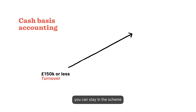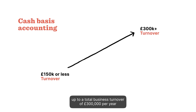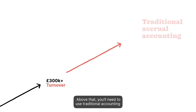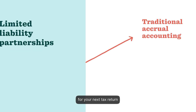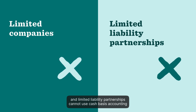If you use cash basis accounting and your business grows during the tax year, you can stay in the scheme up to a total business turnover of £300,000 per year. Above that, you'll need to use traditional accounting for your next tax return. It's also important to know that limited liability companies and limited liability partnerships cannot use cash basis accounting.